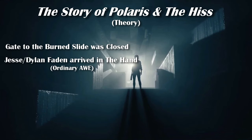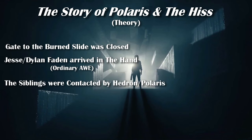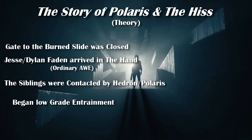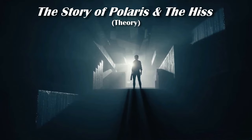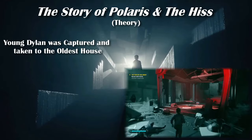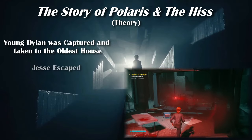When two residents of Ordinary — Jesse and Dylan Faden — arrived in the Hand, either Hedron or Polaris reached out to them. Recognizing the young para-utilitarians, it found potential conduits for itself if the need arose. Calling them special, it began the entrainment process. As a result, Polaris remained with them even after they left, although the amplitude was low. After this event, Dylan was captured by the Bureau and brought back to the Oldest House, while Jesse escaped.